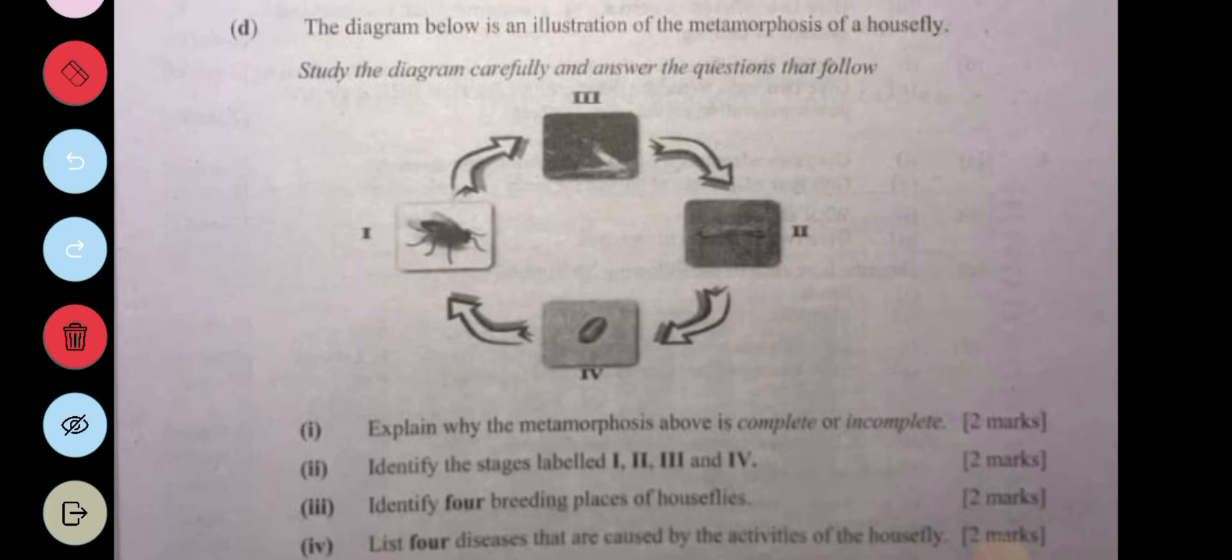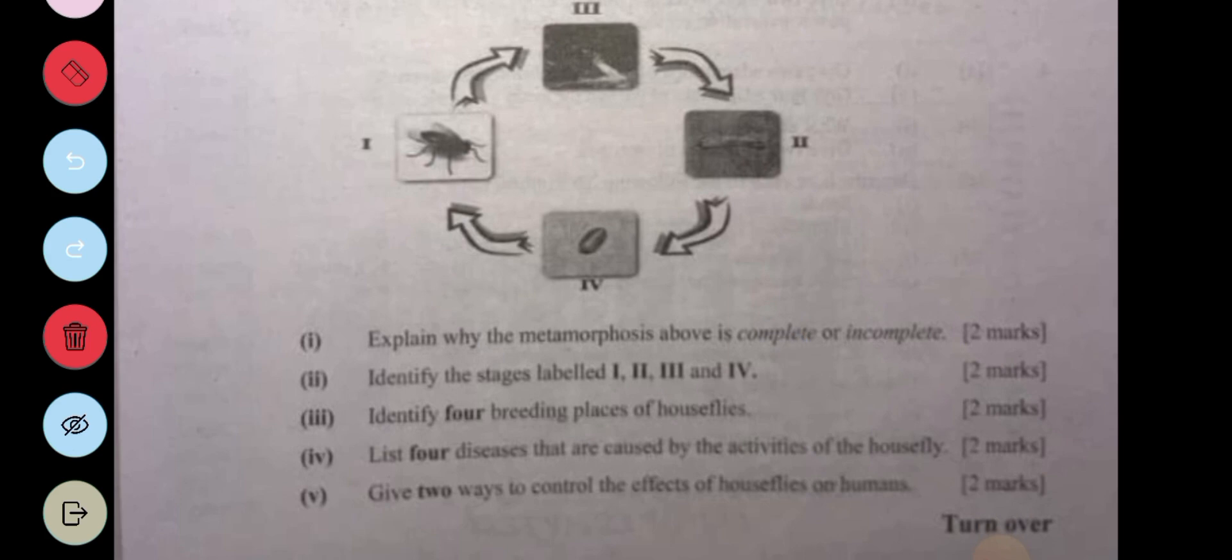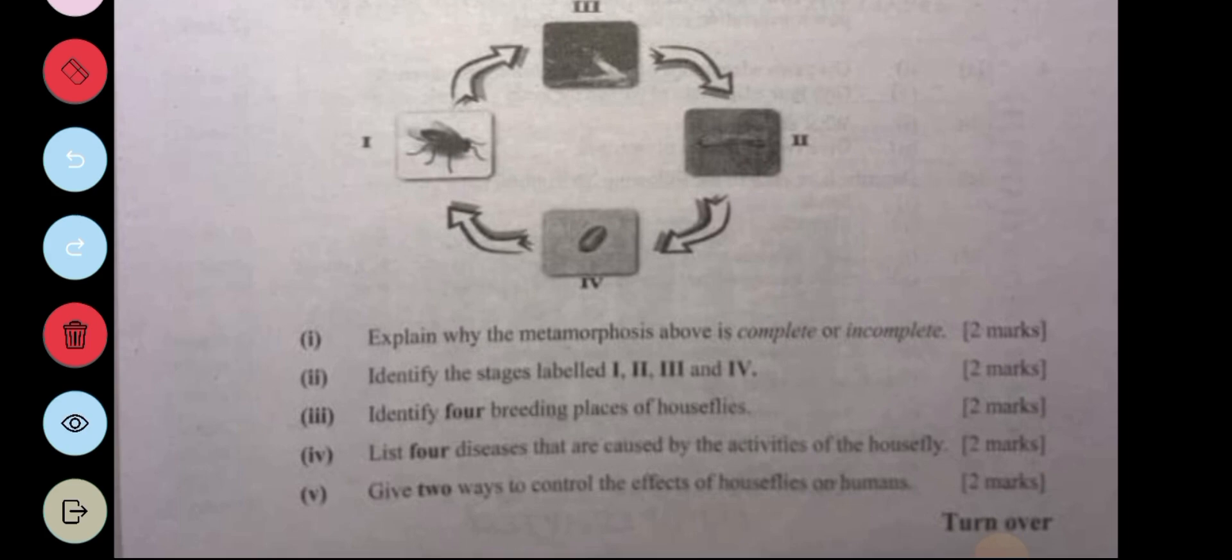The next question is about this diagram. The diagram below is an illustration of the metamorphosis of a housefly. Study the diagram carefully and answer the questions that follow. Part one: Explain why the metamorphosis above is complete or incomplete. With complete metamorphosis you have egg,